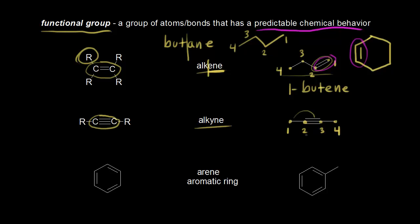So four carbons. We would use bute, and we have a Y-N-E ending for an alkyne. So this is butyne. Let me write out butyne here. Our triple bond starts at carbon two. So here is where our triple bond starts. We could write 2-butyne for the IUPAC name.